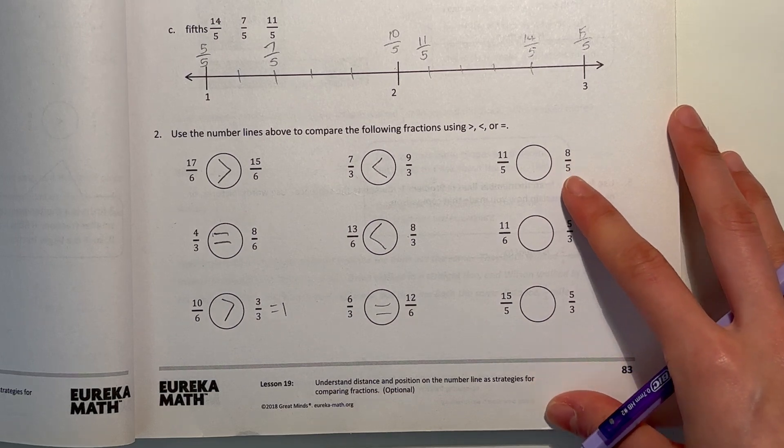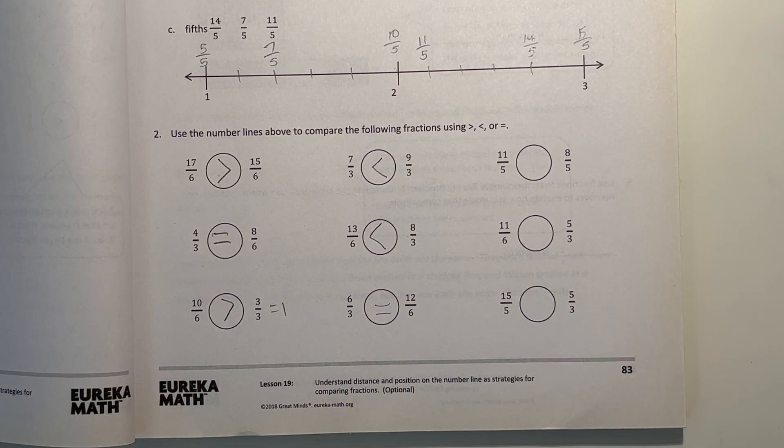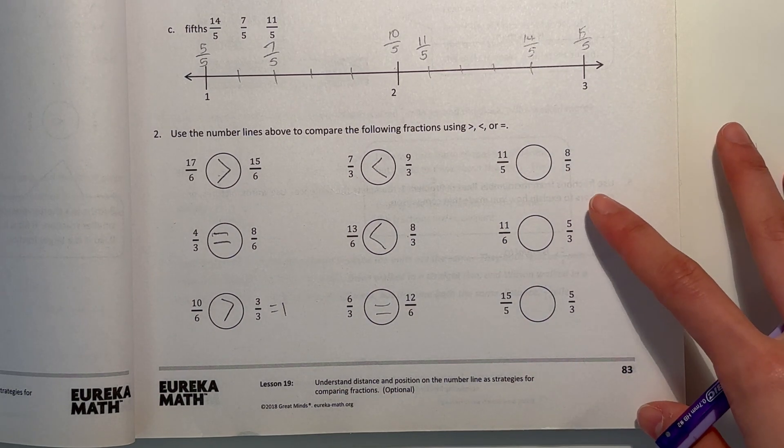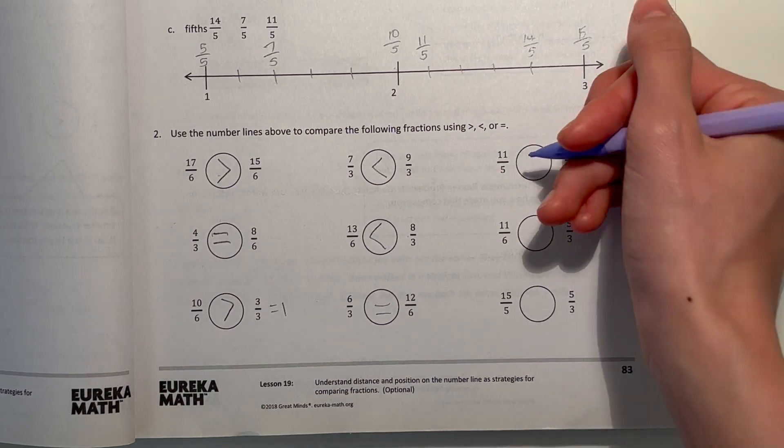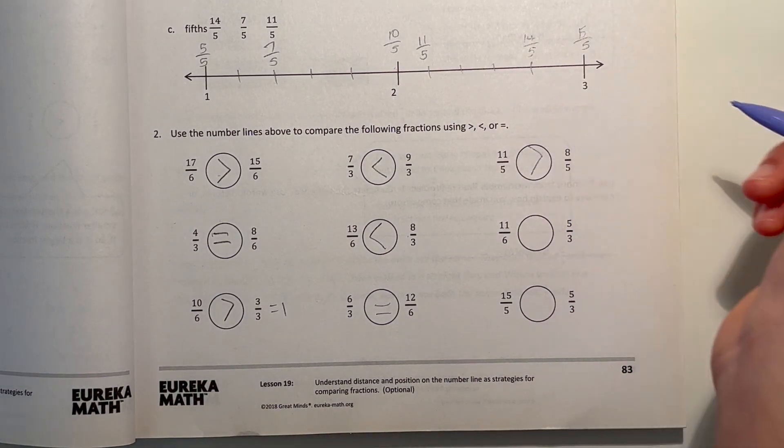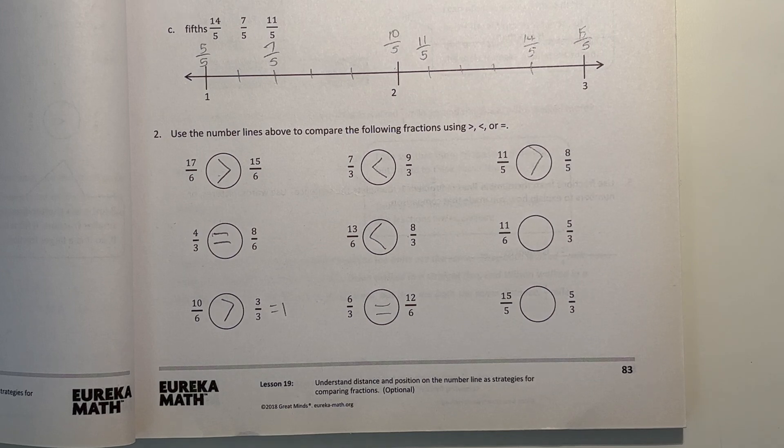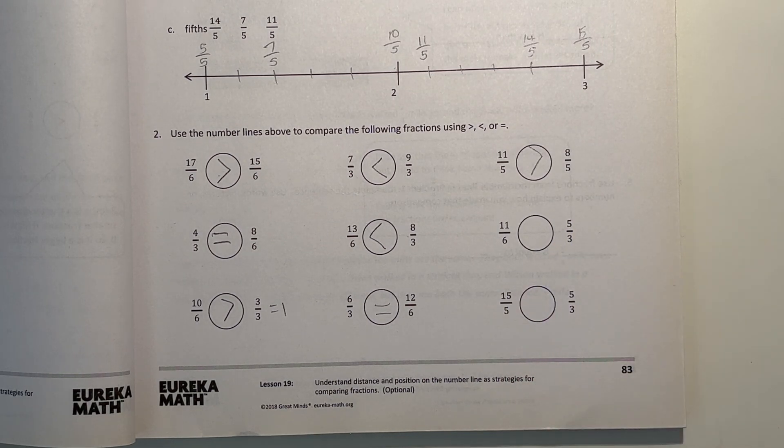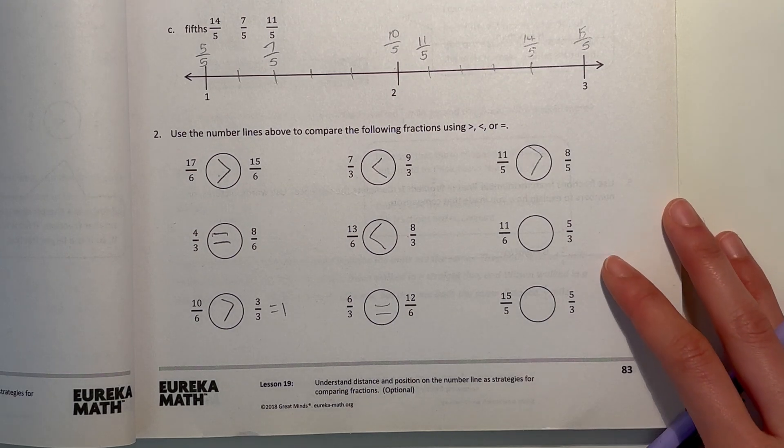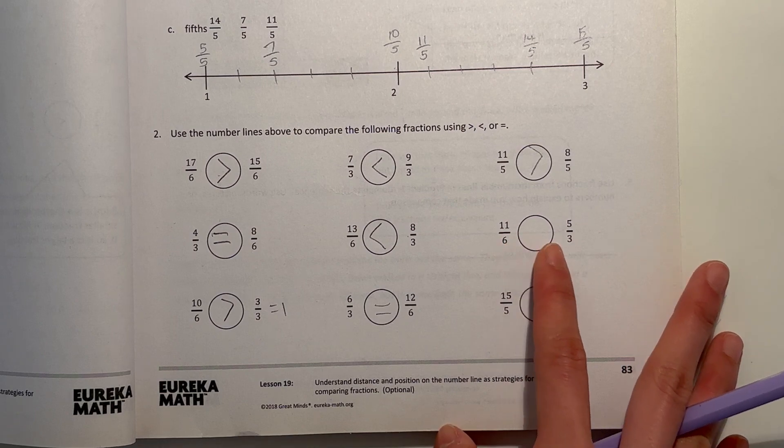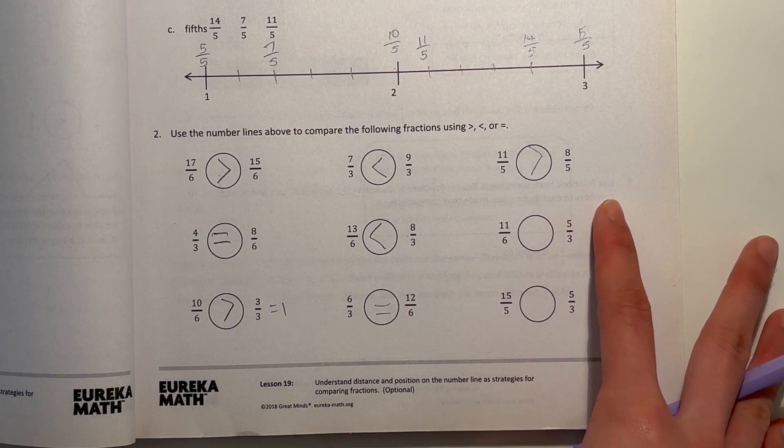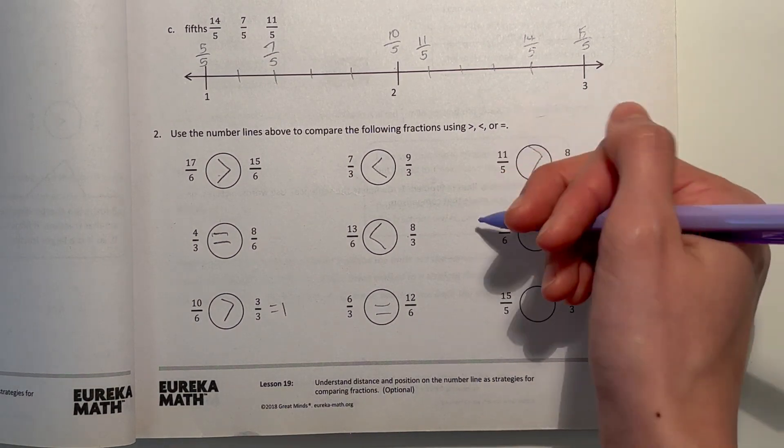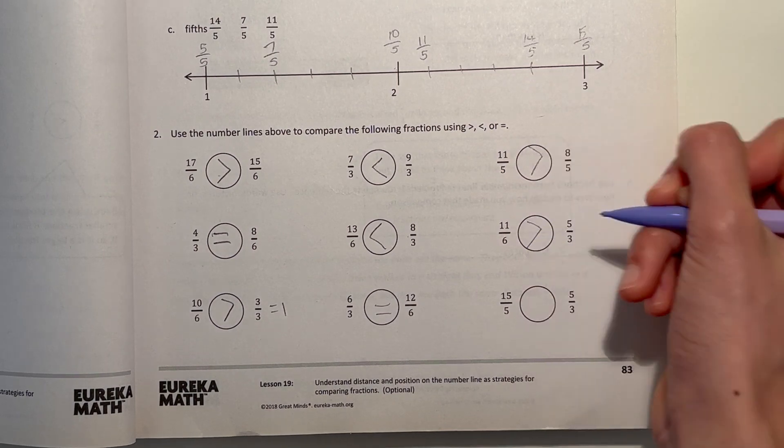Now 11 fifths and 8 fifths. The denominator is the same. So the numerator, 11 is greater than 8. So 11 fifths is greater. Here we have 11 sixths and 5 thirds. So if you multiply 5 thirds by 2 to get to the same denominator, 5 times 2 is only 10. And 10 is less than 11. Which means 11 over 6 is greater than 5 thirds.